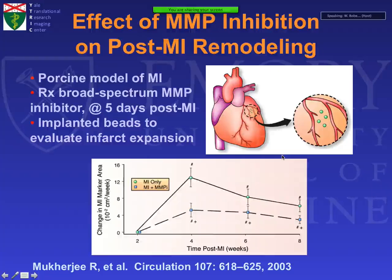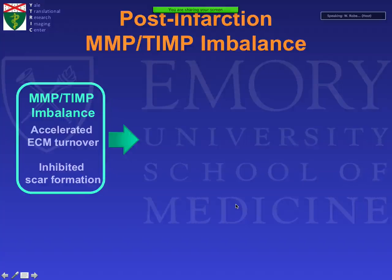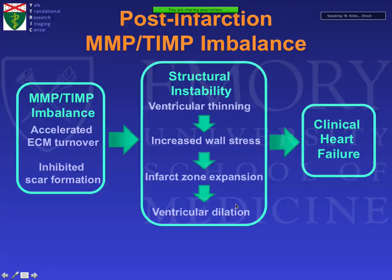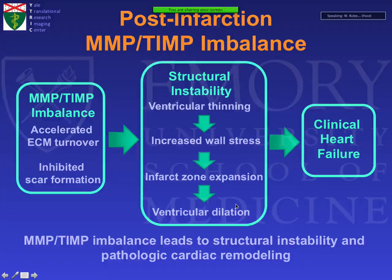For many years I've been collaborating with Frank Spinelli at the University of South Carolina, who has been a pioneer in post-infarct remodeling. Early work in a pig model of myocardial infarction demonstrated the important role of MMPs and that inhibition of MMPs improves the post-infarct remodeling process. The important balance between MMPs and TIMPs relates to extracellular matrix turnover, and can result in ventricular thinning, increased wall stress, infarct expansion, LV dilatation, and ultimately clinical heart failure.